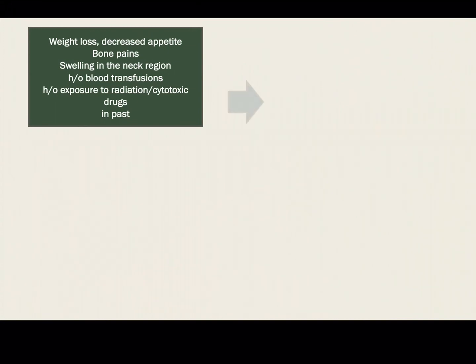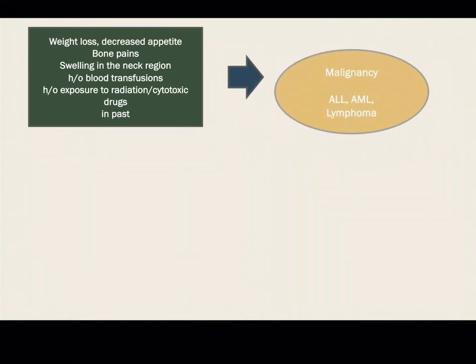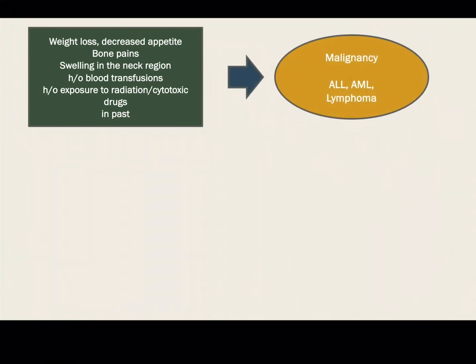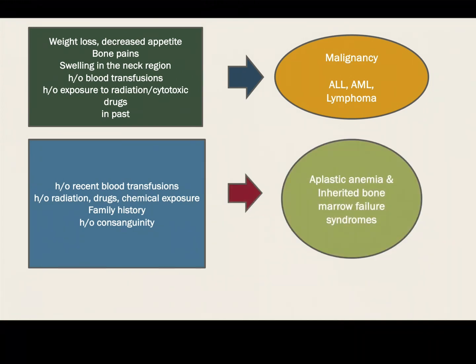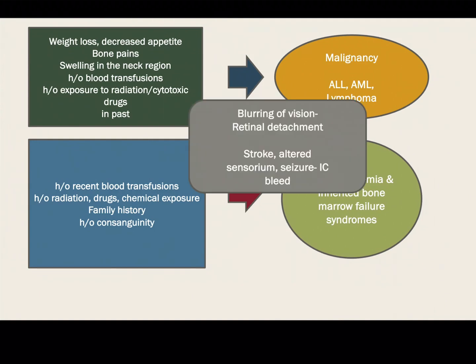History of weight loss, decreased appetite, bone pain, swelling in the neck, and history of blood transfusion or radiation exposure points towards malignancy like ALL, AML, and lymphoma. Whereas history of radiation, drug or chemical exposure, with family history of consanguinity, points towards aplastic anemia or bone marrow failure syndromes.